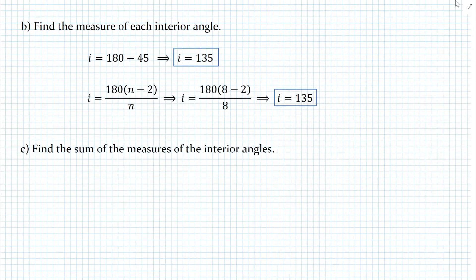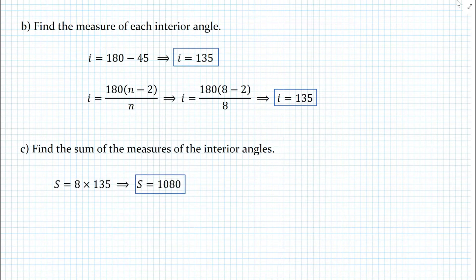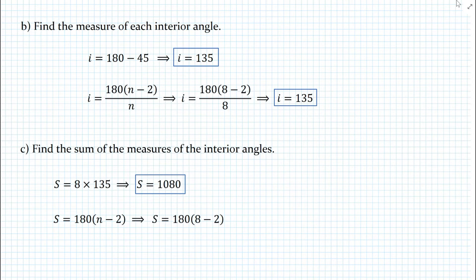For part C, we want to find the sum of the measures of the interior angles. We know each interior angle is 135 degrees and the polygon has 8 sides, so we take the product: 135 times 8 gives us 1080. We can also use the formula 180 times (N minus 2), substituting 8 for N — and again we obtain 1080 for the sum of all interior angle measures.